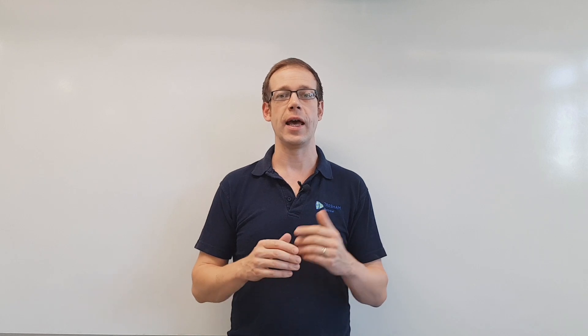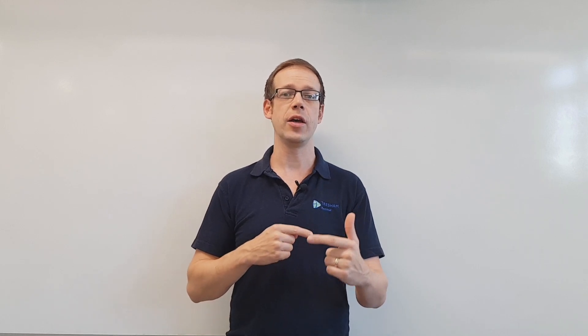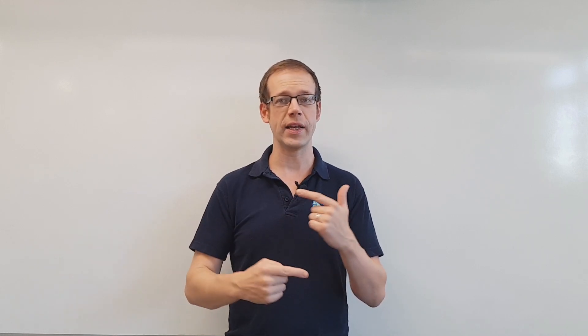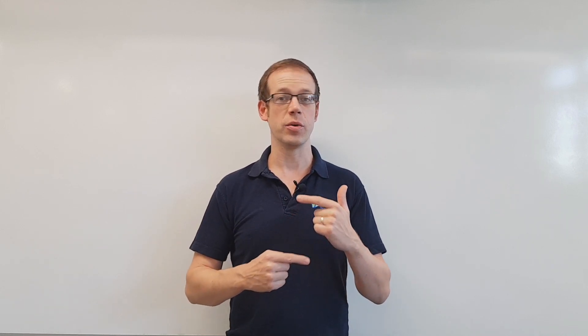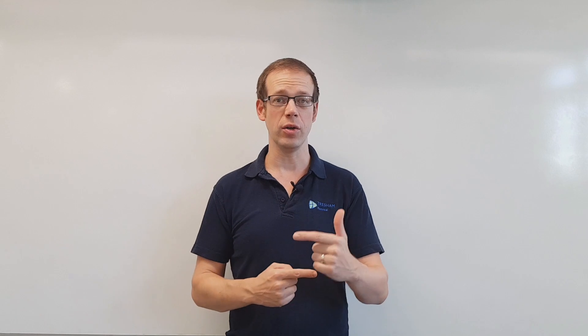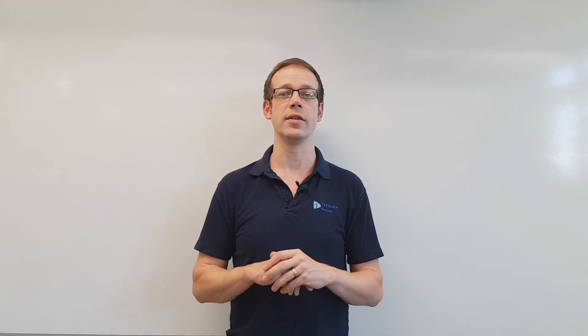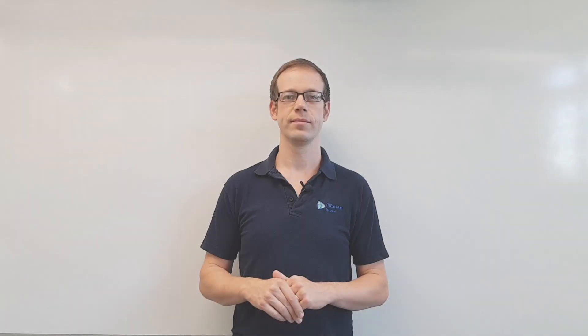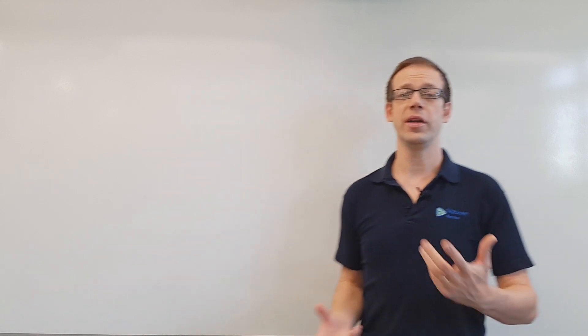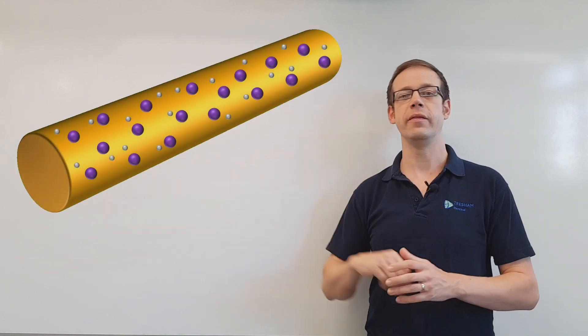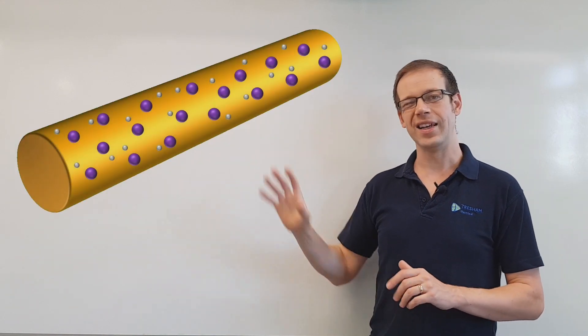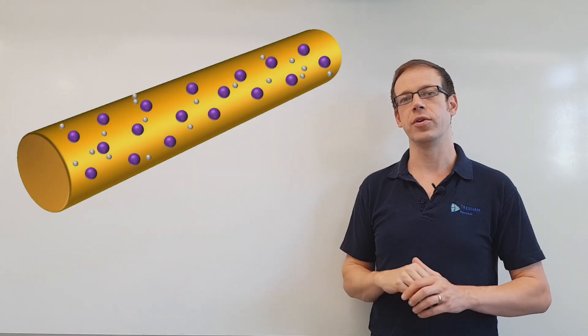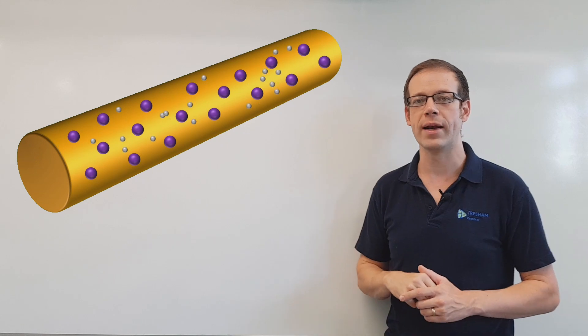What we're going to do in this video is look at how we can turn those drifting electrons into something that we can use. So just as a reminder, here's our copper bar from the previous video and you can see the electrons drifting about randomly.